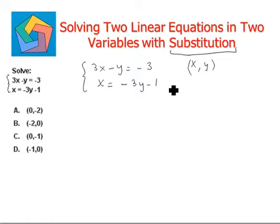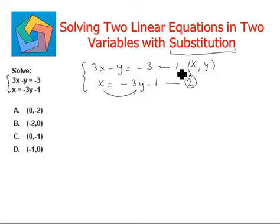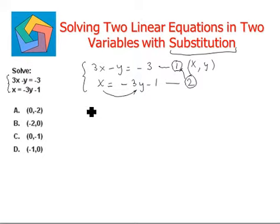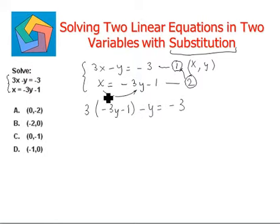In the second equation, we see that we are given a clear relationship of x in terms of y. Using this, we will find out the value of y first. We'll do that by substituting the value of x equals negative 3y minus 1 into equation 1. So we get: 3 times negative 3y minus 1, minus y equals negative 3. We have plugged the value of x as negative 3y minus 1 into equation 1.